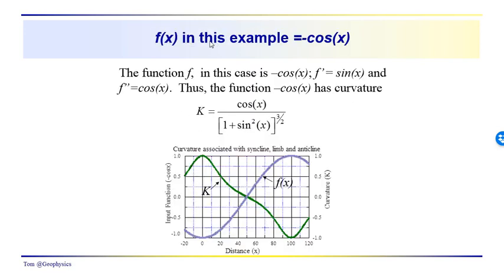Here we have f of x. In this case, as I pointed out, we have a sinusoid — it's negative cosine of x. So f is negative cosine of x, the derivative is sine of x, and the second derivative is just going to be cosine of x. It kind of makes this an easy function to work with. To get the curvature, we just have cosine of x over one plus sine squared of x, to the three-halves power. You can see the input function — f of x equals negative cosine of x — and the curvature.